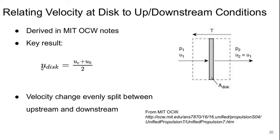The result is that the velocity at the disk is the arithmetic average of the upstream and downstream velocities. So the velocity change is evenly split between the upstream and downstream regions.